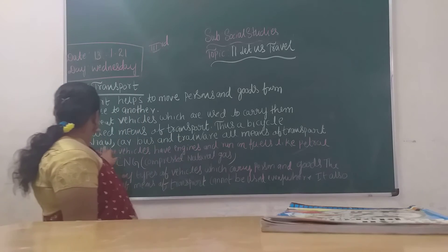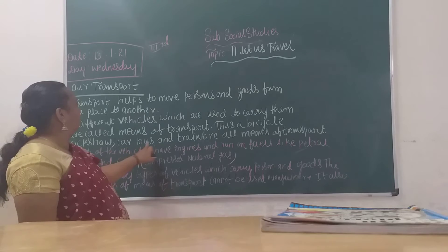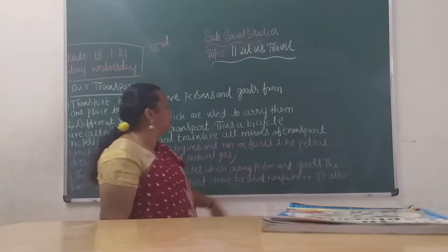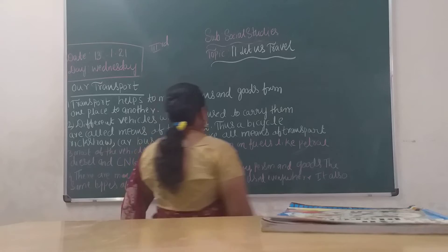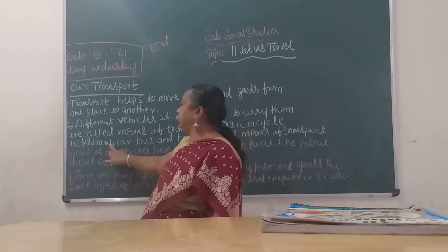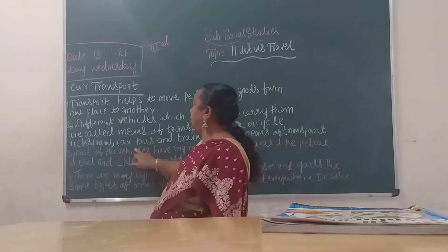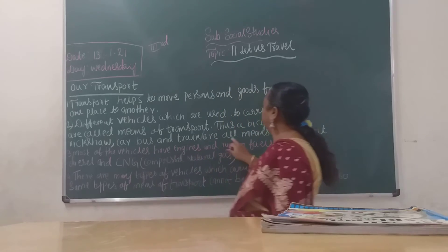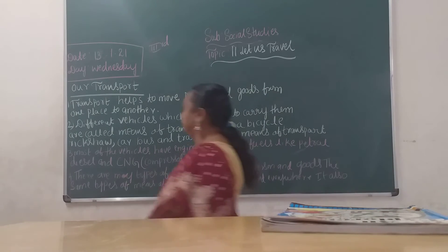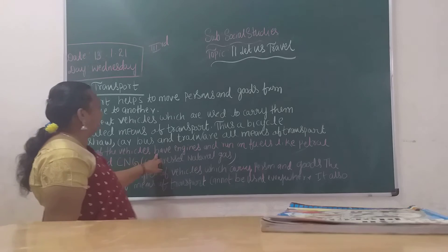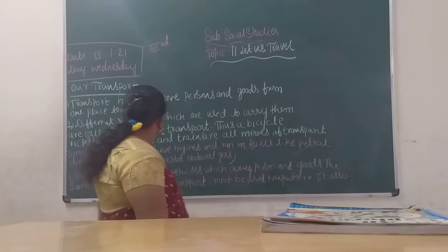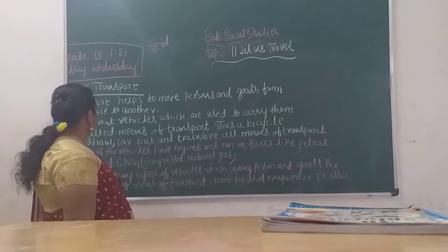Thus, a bicycle, rickshaw, car, bus and train are means of transport. Which are the means of transport? Bicycle, rickshaw, car, bus and train are the means of transport. Most of the vehicles have engines and run by fuels like petrol and diesel.